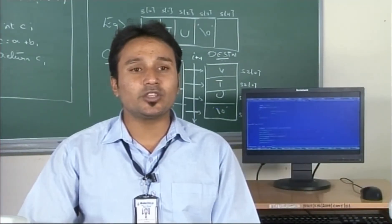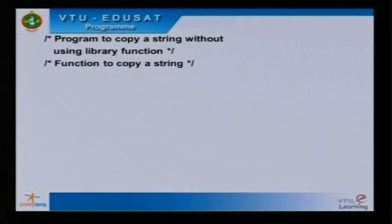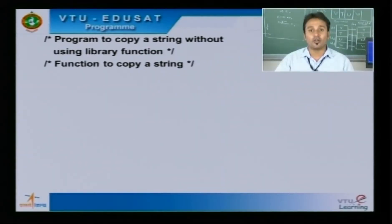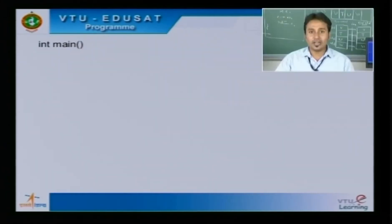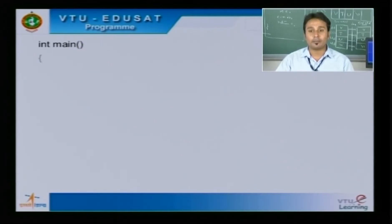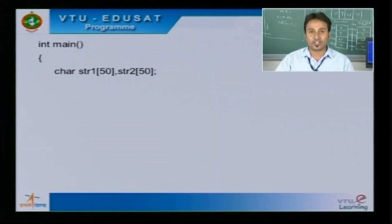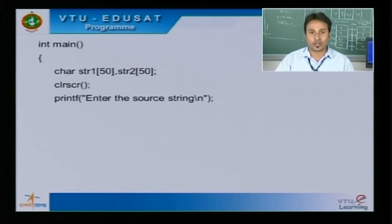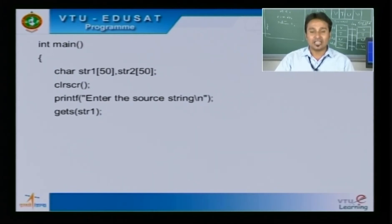This is how the user defined string copy function works. Now let us look at the program to copy a string without using the library function. Execution begins at the main function. In the first line we declare two strings, str1 and str2, of size 50. Next, clrscr() clears the output screen. We then prompt for the source string and scan it using the unformatted input statement gets(str1), which reads the string input.